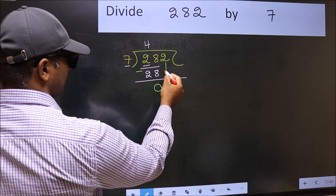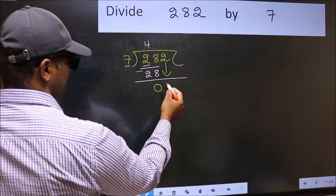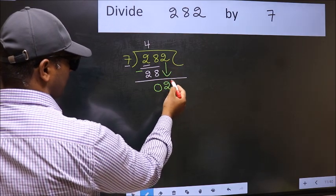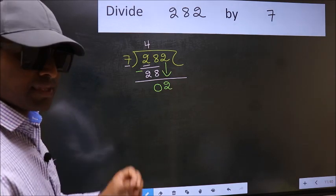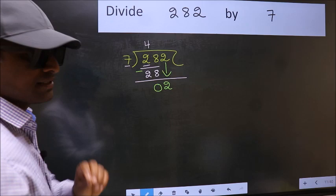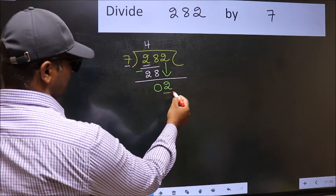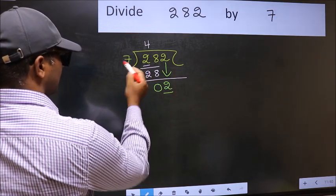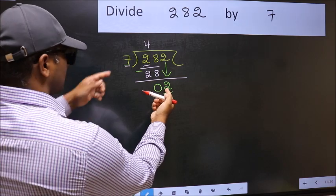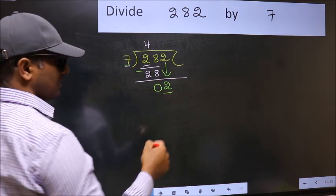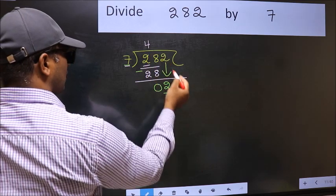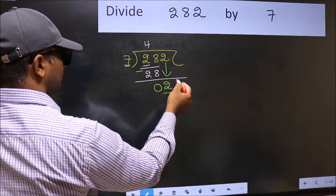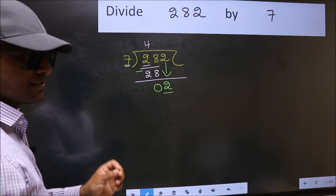After this, bring down the beside number. So 2 down. After this step, the mistake happens. And the mistake is this. Here we have 2 and here 7. 2 is smaller than 7. So what many do is they directly put dot and take 0. Which is wrong.